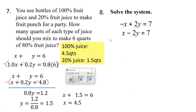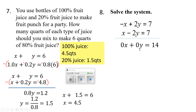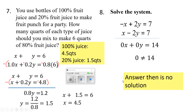Let's work number 8 — solve the system. I'll use elimination. x minus x gives 0, 2y minus 2y gives 0, and 7 plus 7 gives 14. Remember, we added these, so the sign stays the same. This gives us 0 equals 14, which is never true. So there are no solutions.